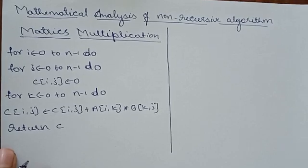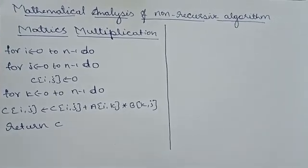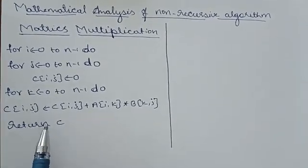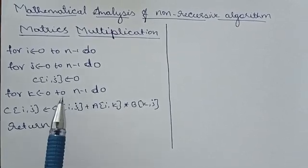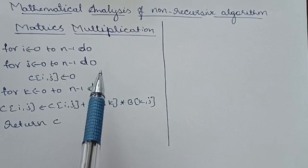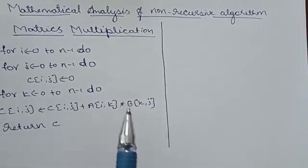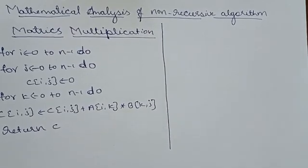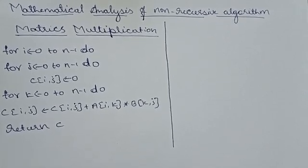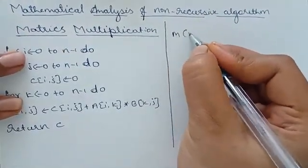You all know the basics of matrix multiplication: we multiply two matrices and the result is stored in a resultant matrix. Here we take two matrices A and B, multiply them, and the result is stored in matrix C. We must have three for loops: for i equals zero to n minus one, for j equals zero to n minus one (one for row, one for column), and for k equals zero to n minus one for the resultant matrix.